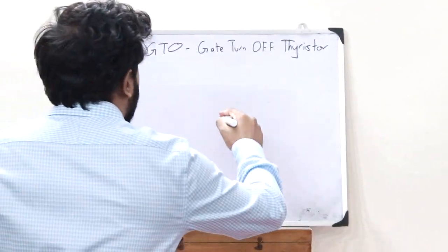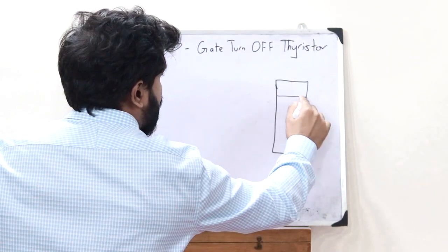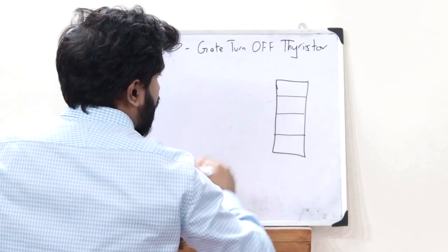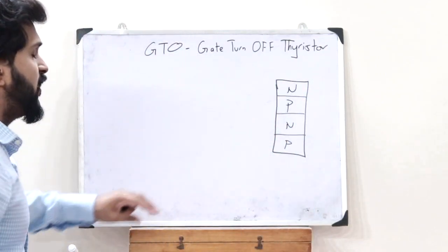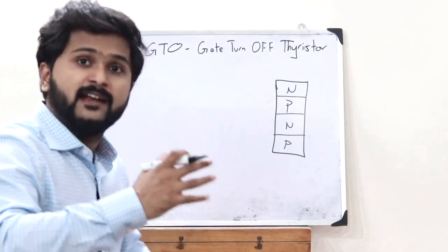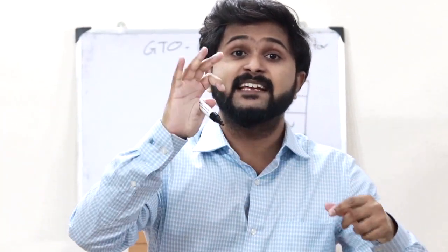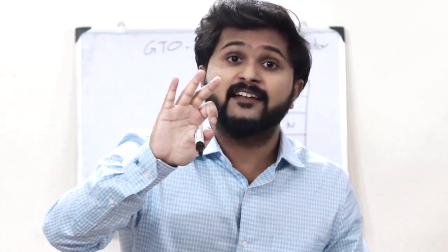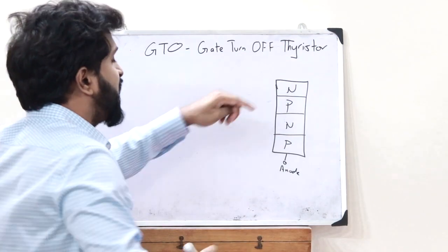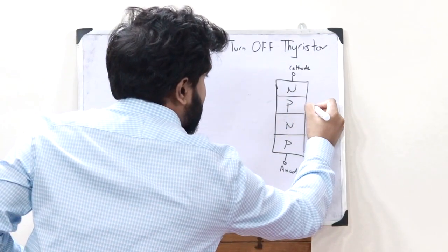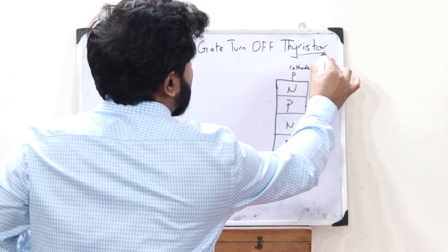If you're drawing a thyristor it would look somewhat like this. It has got four layers with alternative P, N, P, N semiconductor layers. It has got three electrodes: an anode, a cathode, and a gate. So this is the anode, this is the cathode, and this is the gate — the basic structure of what you refer to as a thyristor.